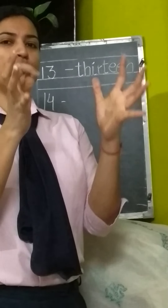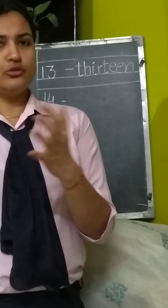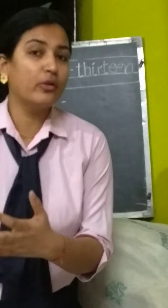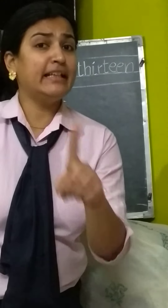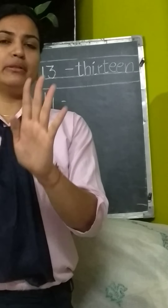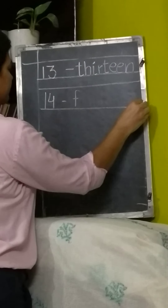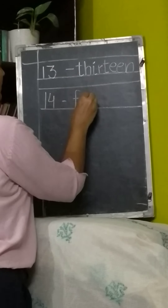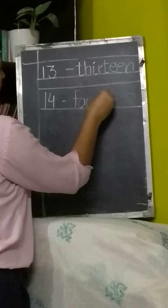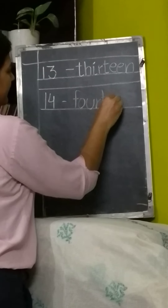And number 14 — 11, 12, 13 — 14 is very simple. You just need to write 4 and add T-E-E-N. The spelling of 4 is F-O-U-R, and you know the spelling of T-E-E-N. So 14 is F-O-U-R-T-E-E-N. Write it down: F-O-U-R, then T-E-E-N. 14.